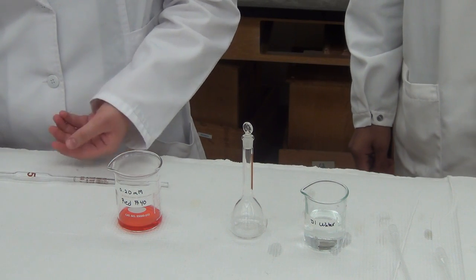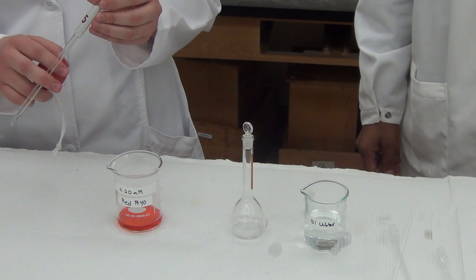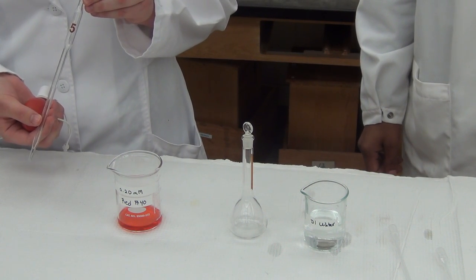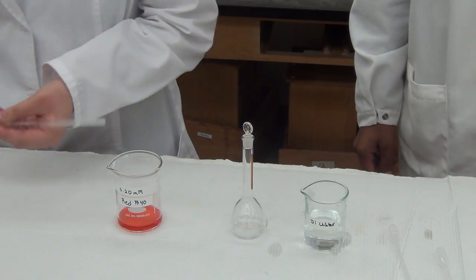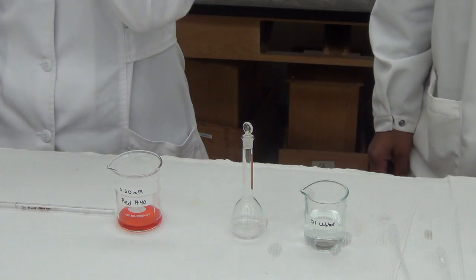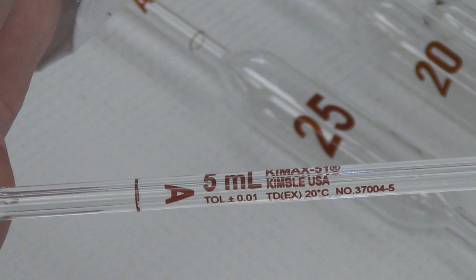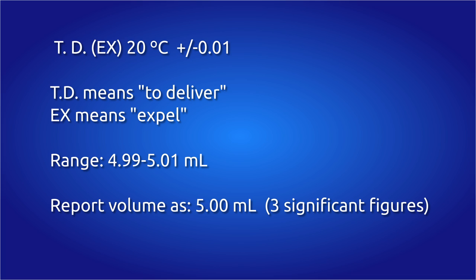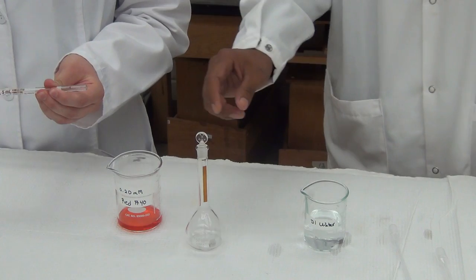A 5 milliliter volumetric pipette will be used to dispense the stock solution into a 50 milliliter volumetric flask. The 5 milliliter volumetric pipette is stamped with a 5 to indicate 5 milliliters and is marked with a single calibration line. The markings at the top of the pipette read TD EX 20 degrees Celsius plus or minus 0.01. TD means to deliver and EX means expel. This pipette was calibrated to deliver 5 milliliters at 20 degrees Celsius with an accuracy of plus or minus 0.01 milliliters.